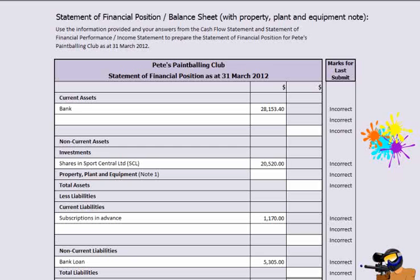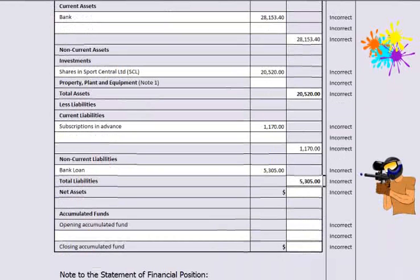We need to calculate the total current assets, total assets, total current liabilities, and total liabilities. To calculate net assets, simply subtract total liabilities from total assets.